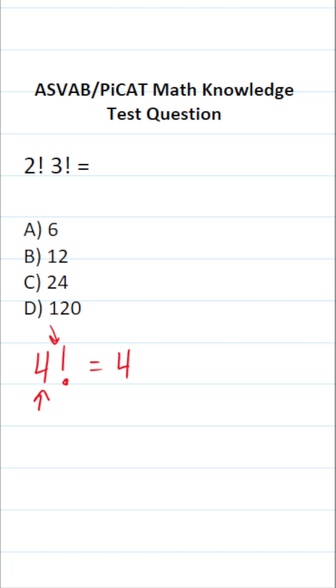So 4 factorial, in other words, is 4 times 3 times 2 times 1.